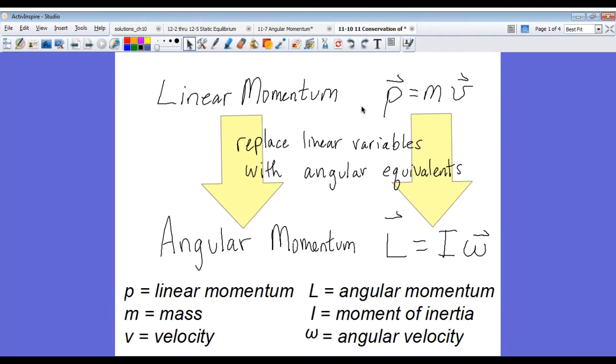Let's begin with our equation for linear momentum, p equals mv. We'll replace the linear variables with the angular equivalents, so p will be replaced with our angular momentum, L, mass will be replaced with moment of inertia, I, and linear velocity will be replaced with angular velocity, omega, to come up with our equation for angular momentum, L equals I omega.